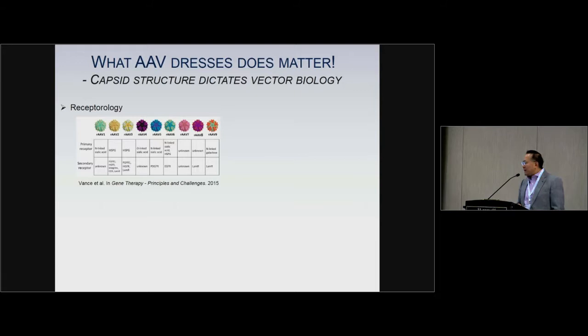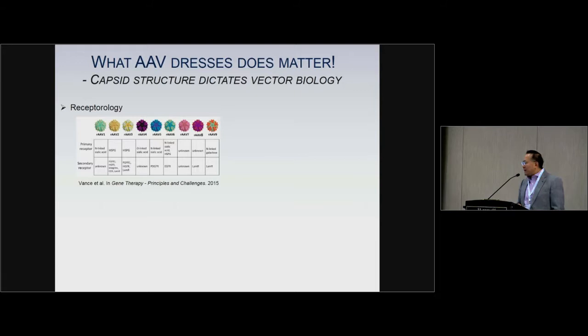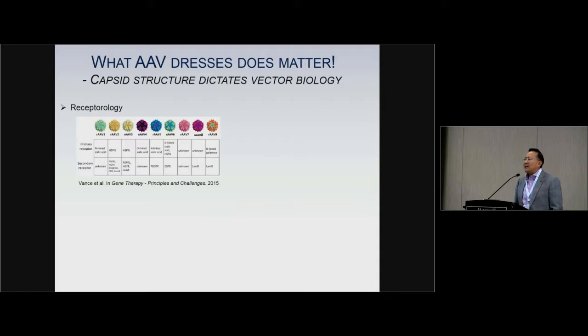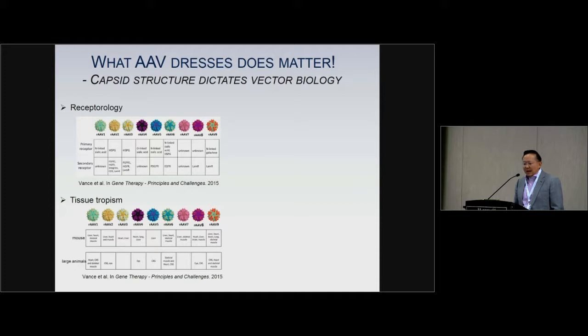These structural differences cause different AAV serotypes to bind different receptors. Many labs have discovered different serotype receptors — including work from Ju's lab, Arun Srivastava's lab, Jay Crane's lab, and Jim Wilson's lab. The most exciting recent discovery was the AAVR universal receptor by Michael Chapman's lab. Because of these differences in receptorology and other factors, different capsids have different tissue tropisms.